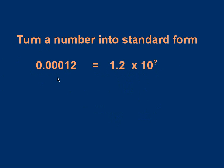Now let's look at a different kind of number. Can we turn 0.0012 into standard form? Let's start by writing the mantissa — it will be 1.2. So the value will be 1.2 times 10 to some power. To get the mantissa back to the original number, we have to divide the mantissa by 10 a number of times. The number of times we divide by 10 will be expressed as a negative exponent.